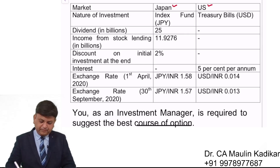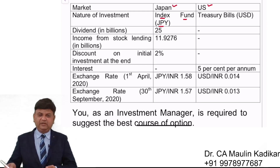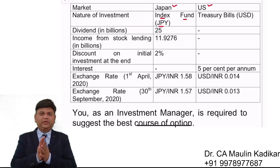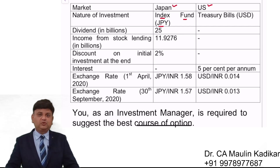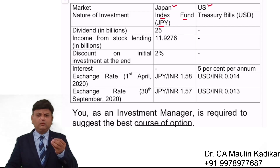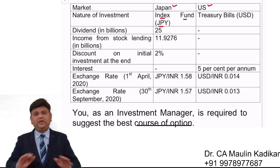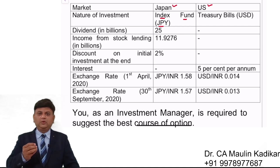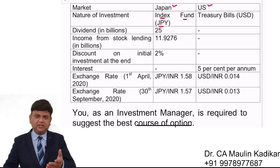The Japan option involves an index fund investment. An index fund is a diversified portfolio — you may have heard of Sensex and Nifty. Besides market-wide index funds, there are sector-wise index funds as well, such as the IT sector, banking sector, and so on.